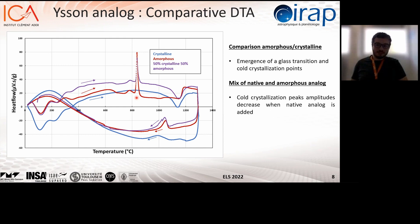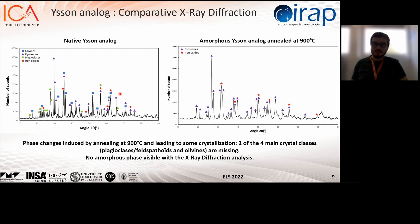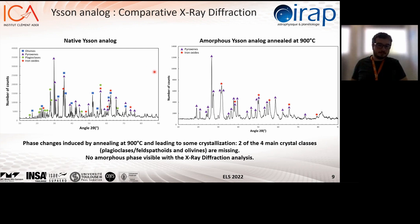Now that we know some phases crystallize while we heat the Ison analog, we are going to try to identify them. We took a solid chunk of amorphous analog and put it in a furnace at 900 degrees — just enough to crystallize it but not enough to melt it. Here are the obtained X-ray diffraction analyses. On the left is the native Ison analog; on the right is the annealed amorphous chunk. Passing from the native to the crystallized sample, the main difference is that two main crystal families have disappeared: the olivines and the plagioclases. In both cases, we do not see any remaining amorphous phase. The final difference in composition could have an effect on mechanical properties that still needs to be determined.